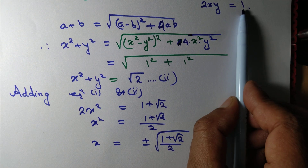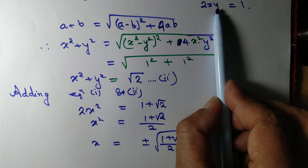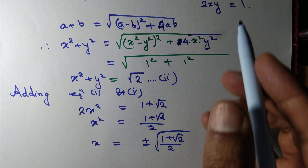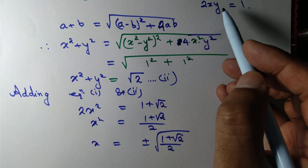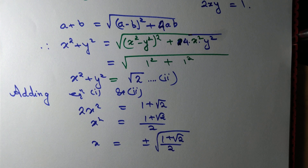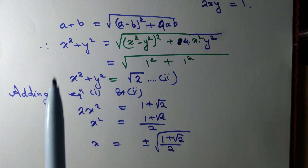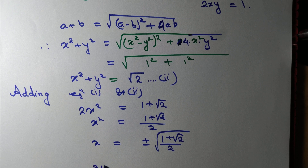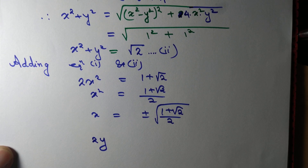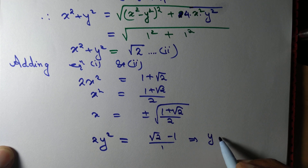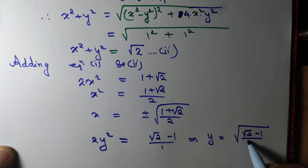Since 2xy = 1, if x is positive then y must also be positive, and if x is negative then y must also be negative. Subtracting equation 1 from equation 2 gives 2y² = √2 - 1, so y = √((√2 - 1)/2).